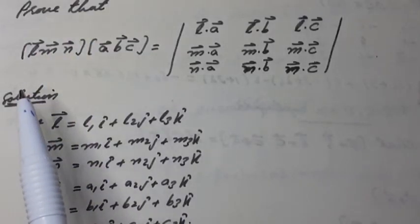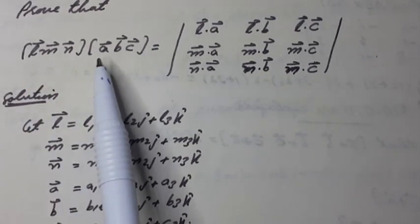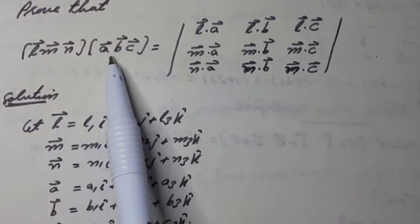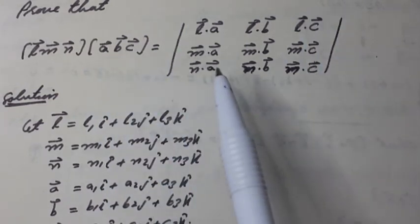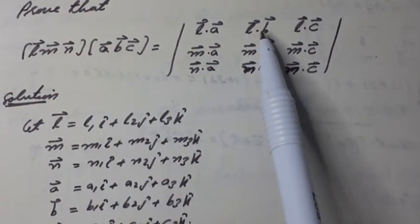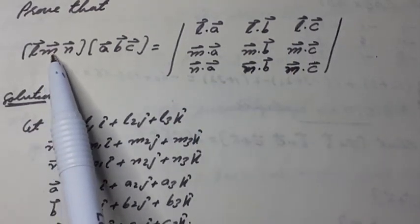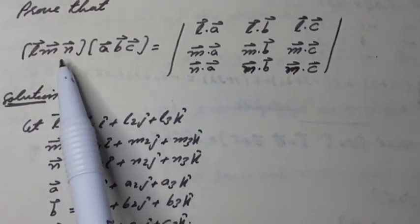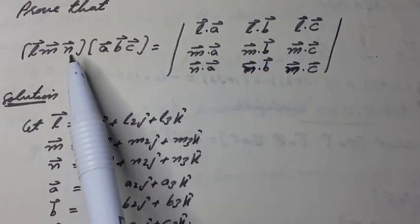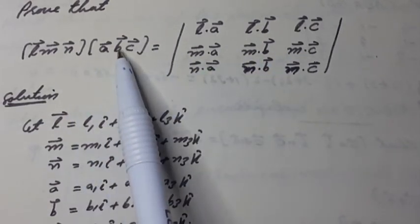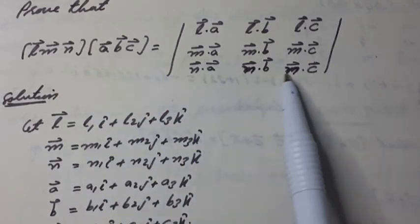Prove that [L M N] · [A B C] (box product) is equal to the determinant with first row: L·A, L·B, L·C; second row: M·A, M·B, M·C; and third row: N·A, N·B, N·C.